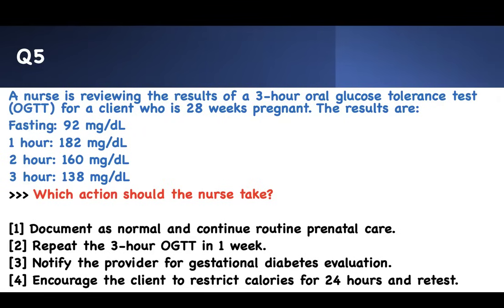Concept five: a nurse is reviewing the results of a 3-hour oral glucose tolerance test for a client who is 28 weeks pregnant. We do this because we worry the 1-hour test was abnormal and we want to confirm a diagnosis of gestational diabetes. The client fasts, then is given glucose. The fasting glucose was 92 mg/dL, then at one hour 182, at two hours 160, and at three hours 138. Write down the thresholds — fasting glucose must be less than 95, at one hour less than 180, at two hours less than 155, and at three hours less than 140.